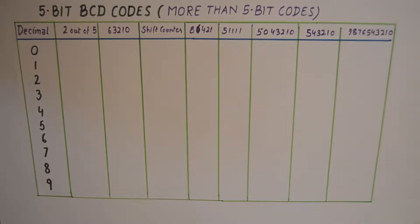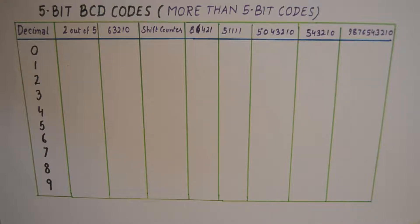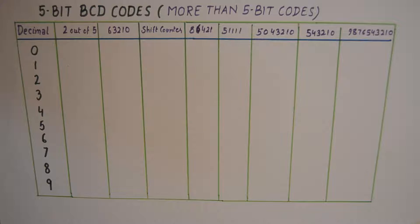Hello friends, welcome to another tutorial in the digital electronics series. In today's tutorial I have compiled a list of 5-bit BCD codes, and you will also find BCD codes which are more than 5 bits long. Each decimal number will be represented using 5 or more bits, with only permissible symbols 0 and 1 — that is why they are known as binary coded decimal. Each decimal number will have a unique combination which makes it a separate code.